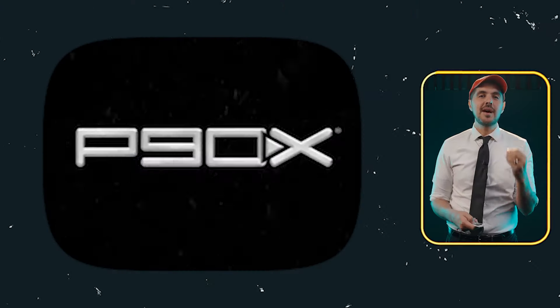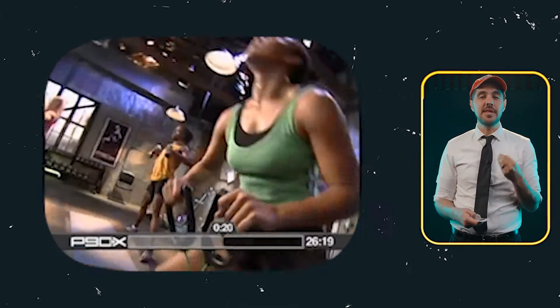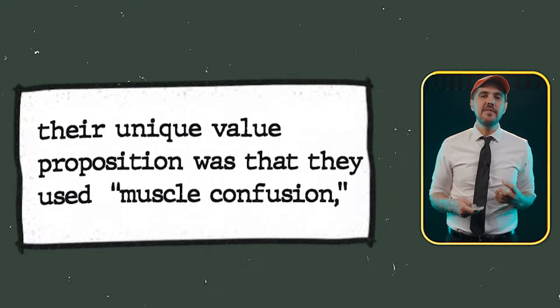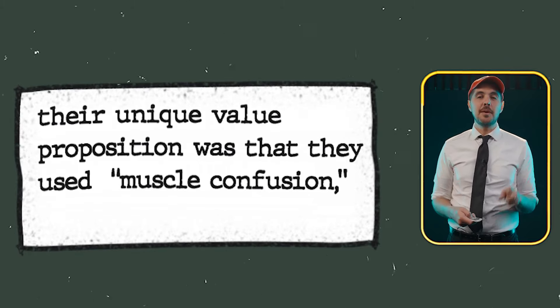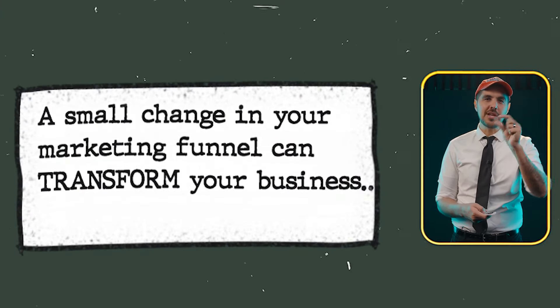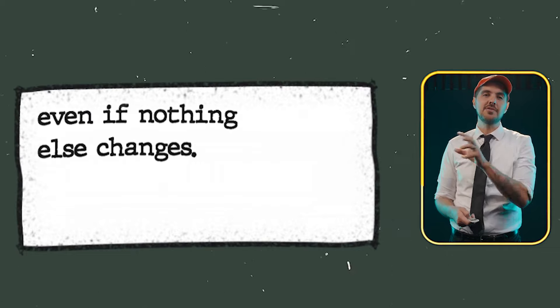One, their infomercial — they rewrote the entire copy and re-filmed it, adding videos of people doing the workouts with tons of before and after testimonials. And two, they said their unique value proposition was that they used muscle confusion, which they made up, but it worked — it had a sticky virality to it. They basically changed the ad, which got more leads calling, which led to more sales, which led to a lower cost per acquisition. Downstream of that one change, they reached hundreds of millions of dollars in sales. The lesson: a small change in your marketing funnel can transform your business, even if nothing else changes.